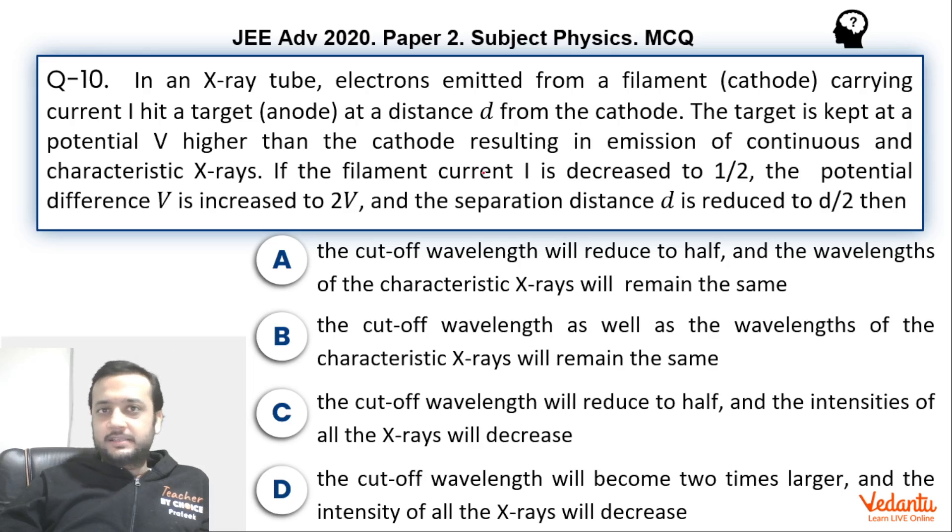Now the filament current is decreased to half. Potential difference between cathode and anode is doubled. And the distance between the cathode and anode is made half. So based upon these changes,